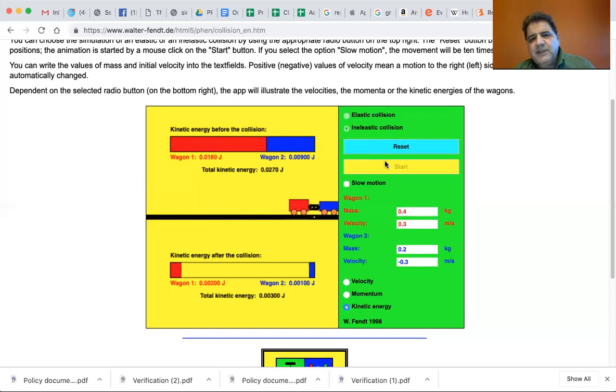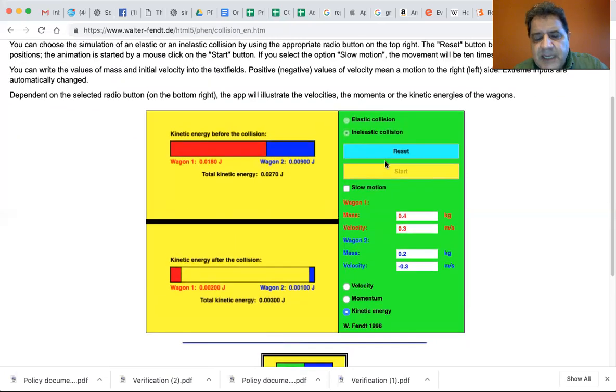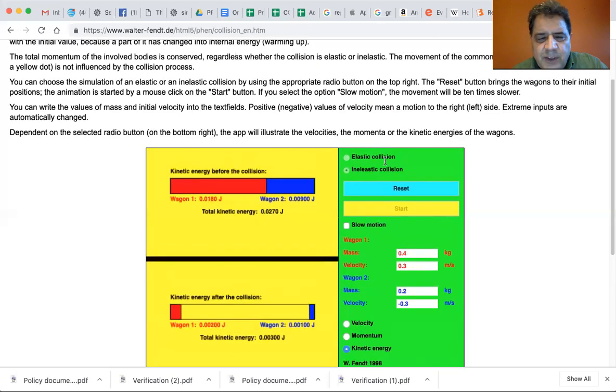So your assignment is to pick an elastic collision. You can leave the wagon two velocity zero, but in the inelastic collision, I want you to make it a negative velocity and see what happens, but I want your calculations. I want your calculations done neatly and understandably when you turn it in.